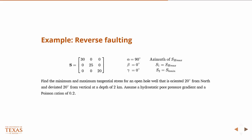So we can work an example. There, I'm giving you a stress tensor, a principal stress tensor, so those are the principal stress directions for reverse faulting scenario. And I'm giving you the three angles, so how this is oriented with respect to the geographic coordinate system. So in this case, since beta and gamma are zero, it's basically just a rotation in the plane. So SH max is 90 degrees from north. And so then what we want to do is we want to find those minimum and maximum tangential stress for an open hole well.